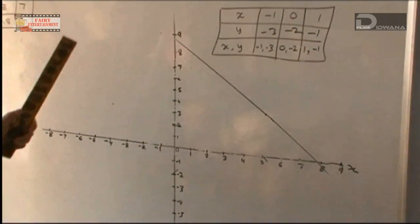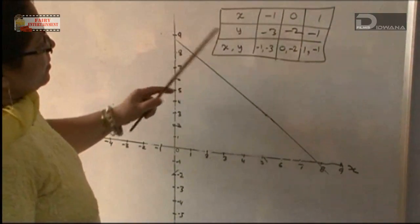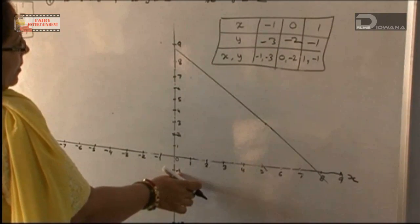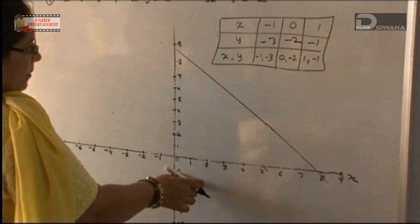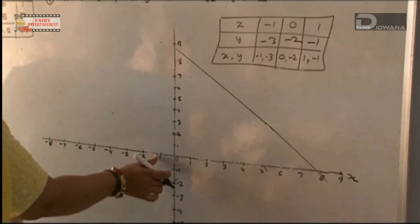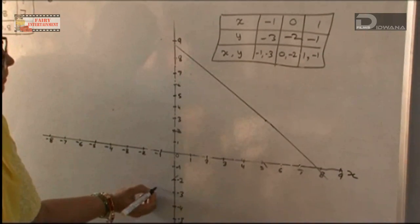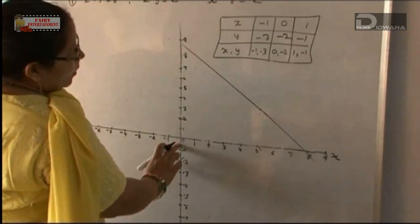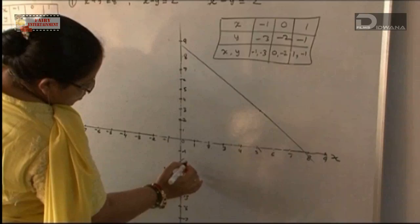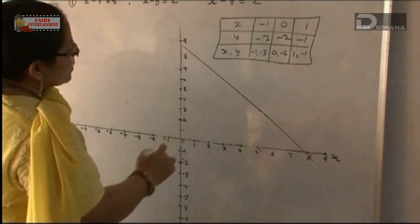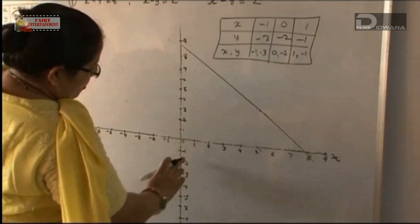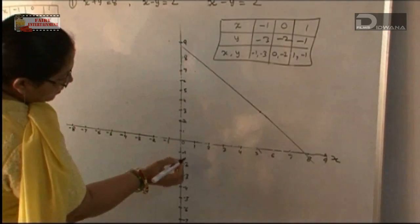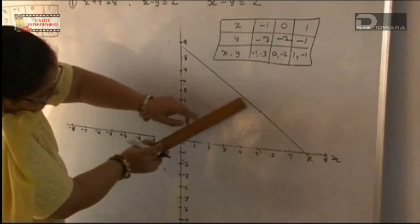For Equation 2, we plot the points on the graph. The point (minus 1, minus 3) is placed at x equals minus 1 on the x-axis and y equals minus 3 on the y-axis. The point (0, minus 2) is plotted next, followed by (1, minus 1). The line for the second equation is drawn through these points.